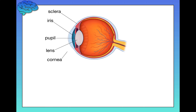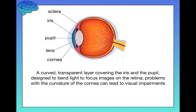Next, we have the cornea, which is similar — it's the second structure that serves the role of bending light to focus images on the retina. The cornea is a curved, transparent layer that covers the iris and the pupil. Problems with the curvature of the cornea can lead to visual impairments. So if you're nearsighted or farsighted, it's very possible that a problem with the curvature of your cornea is at fault — but I'll get to that in just a little bit.